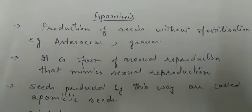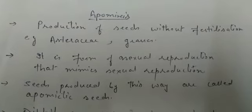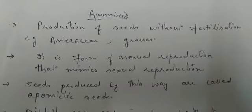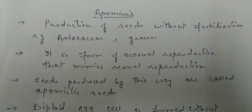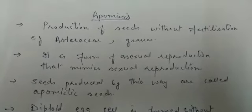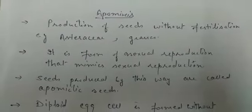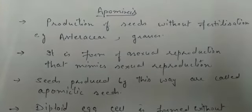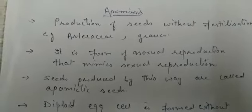Good morning students. Our next topic is apomixis. Apomixis means production of seeds without fertilization. As we have already covered, seeds are normally produced after fertilization, but there are some cases in which seeds are produced without fertilization — we call it apomixis. It is found in some Asteraceae families and grasses.